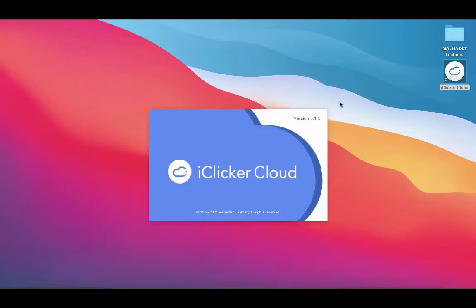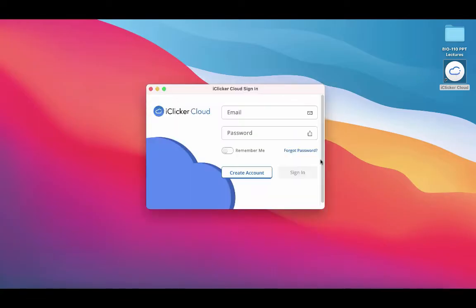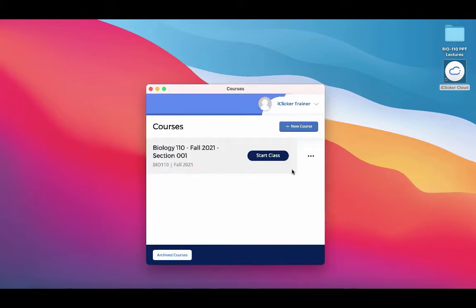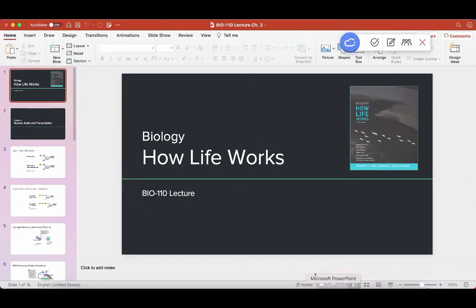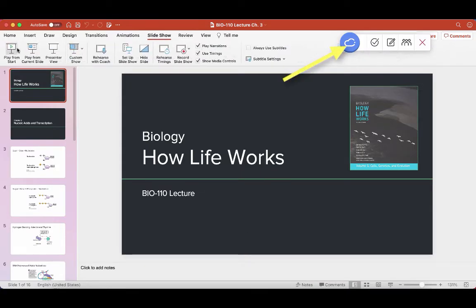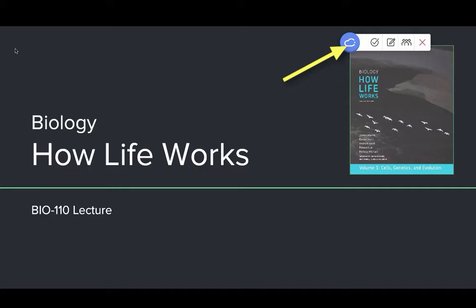When you're ready to start class, begin by logging into the iClicker Cloud desktop software. Start your iClicker class by clicking start class, and then open up your presentation software. We can see that the iClicker toolbar floats over our PowerPoint presentation, even when we enter full screen mode. Now you're ready to poll students.